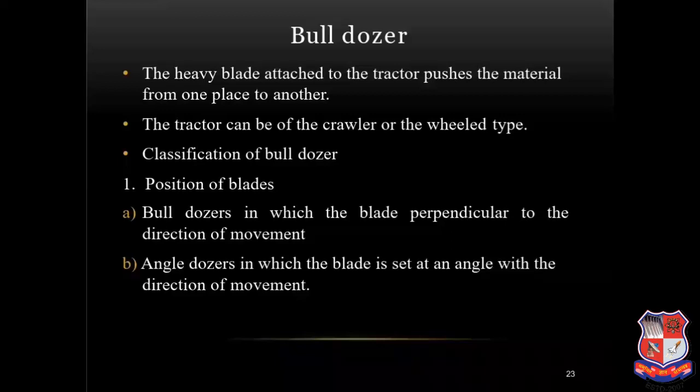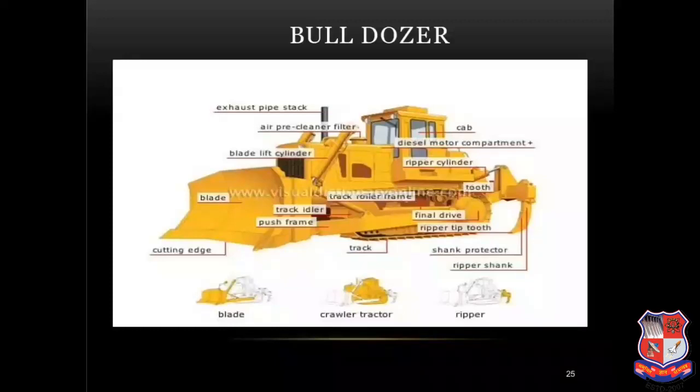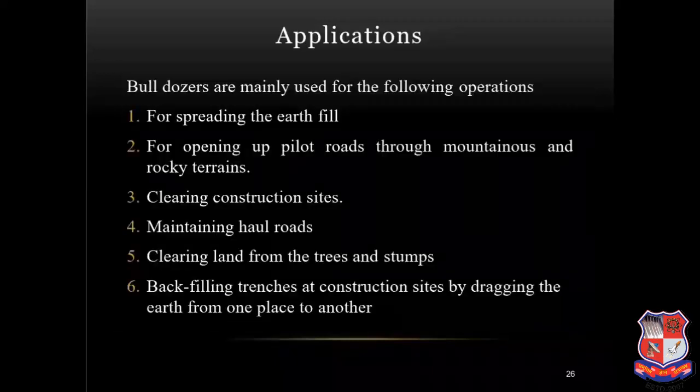The bulldozer has a heavy blade attached to the tractor which pushes material from one place to another. The tractor can be of crawler or wheel type. Classification of bulldozer: by blade position — a bulldozer in which the blade is perpendicular to the direction of movement, and an angled bulldozer in which the blade is set at an angle. Second classification is based on mounting: wheel mounted and crawler mounted. Third is based on control: cable control and hydraulically controlled. Applications include spreading earth fill, opening pilot roads through mountains and rocky terrain, clearing construction sites, maintaining haul roads, clearing land from trees and stumps, and backfilling trenches by dredging earth from one place to another.